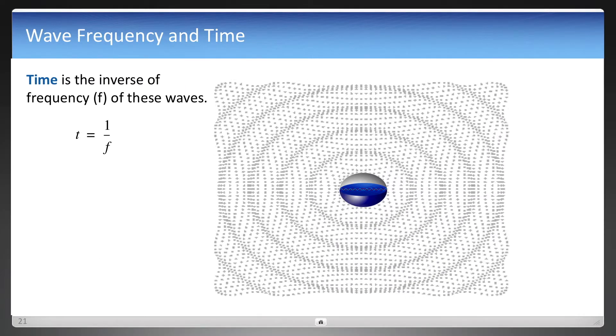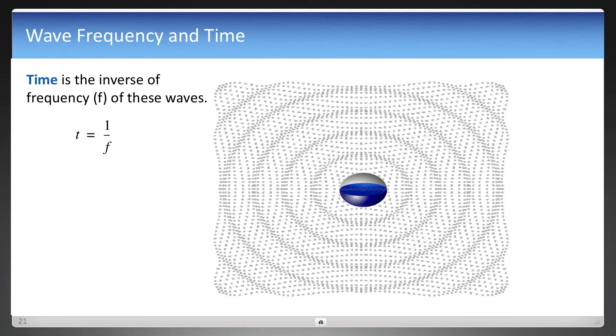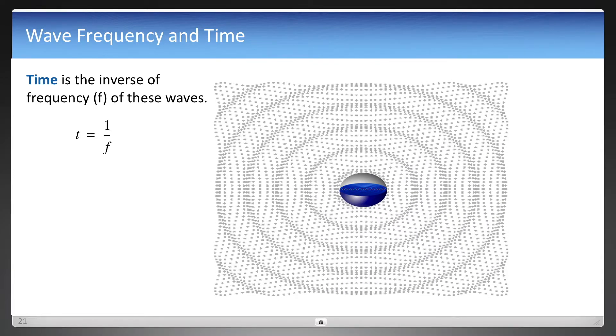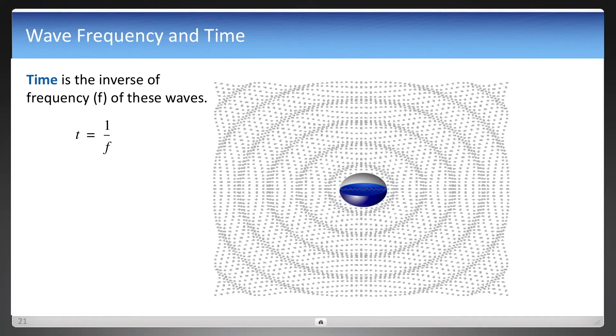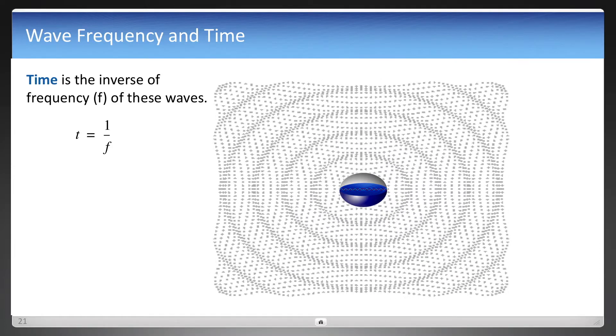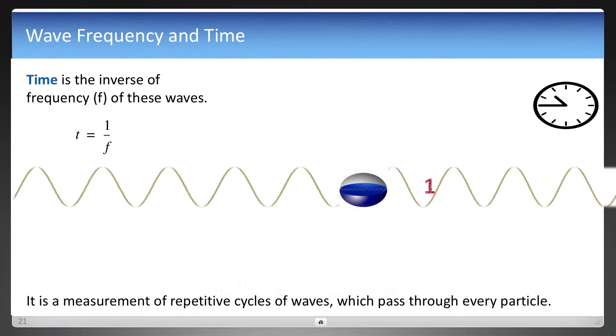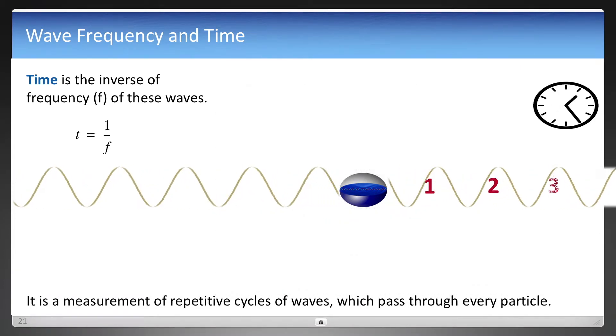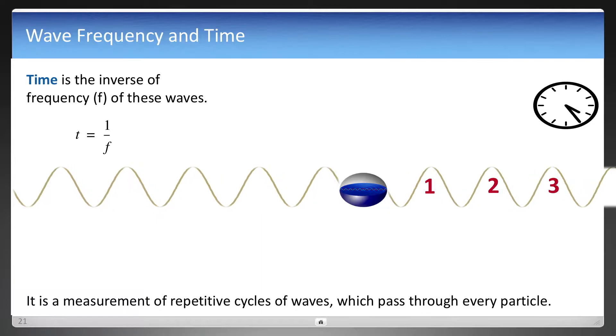Now one nice thing about having consistent wavelength, longitudinal wavelength at least, is that wavelength and frequency are related by speed, and then time is related on frequency. And what that allows you to do is measure something in time, which is repetitive cycles of waves.